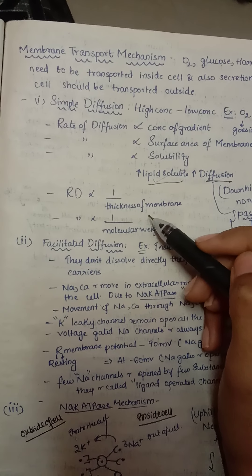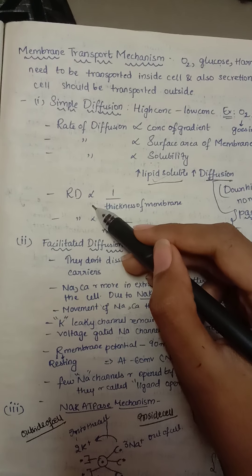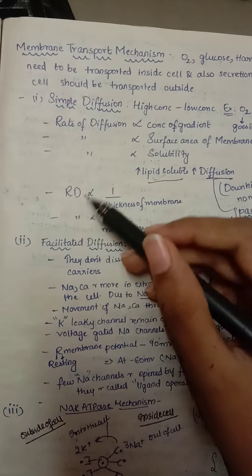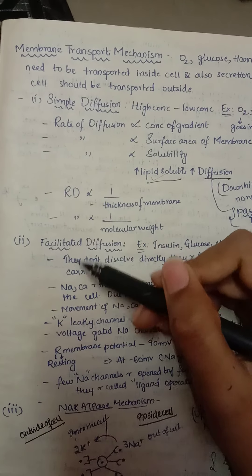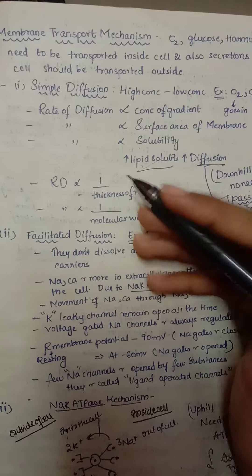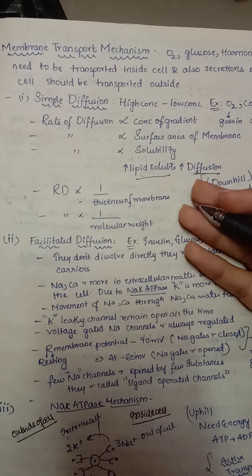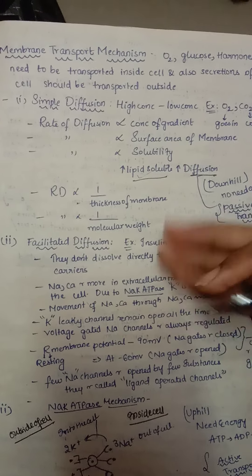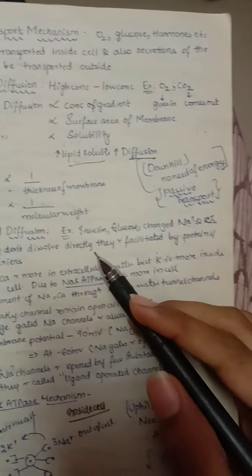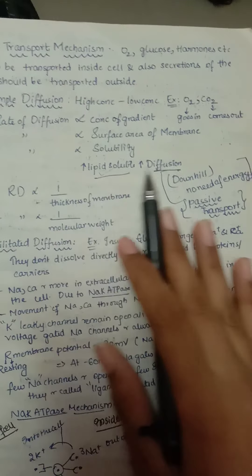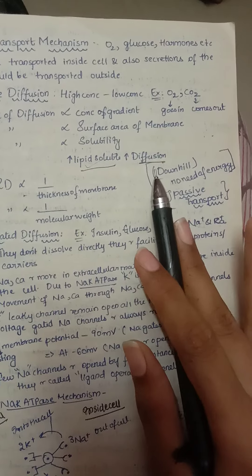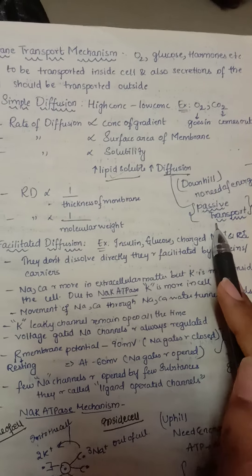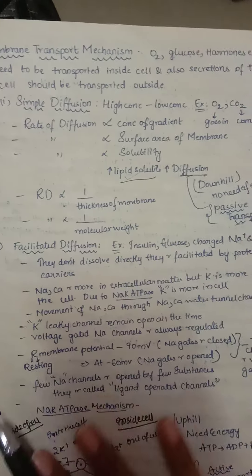The rate of diffusion is inversely proportional to the thickness of the membrane — if the membrane is thicker, diffusion decreases; if it is thinner, diffusion increases. Rate of diffusion is also inversely proportional to molecular weight — higher weight means harder to pass, lower weight means easier. So simple diffusion is a downhill process requiring no energy; it is a passive transport.